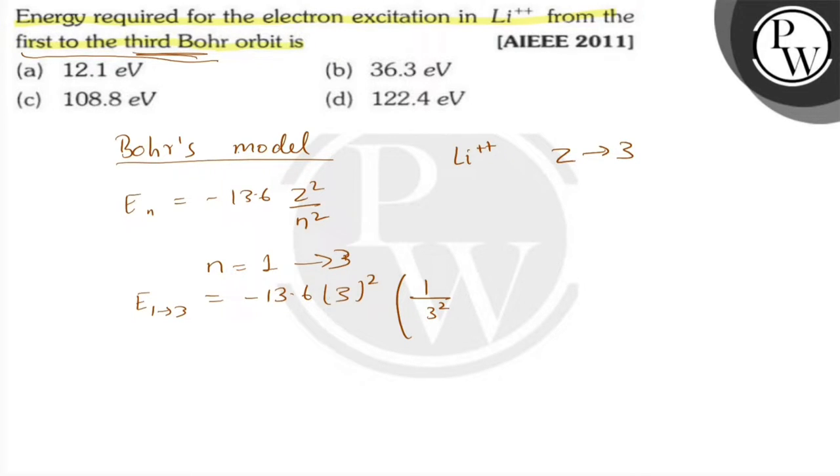That means -13.6 × (3)² × (1/3² - 1/1²). This equals -13.6 × 9, and the calculation gives us 8/9, so the 9s will cancel.